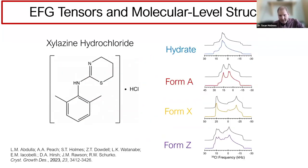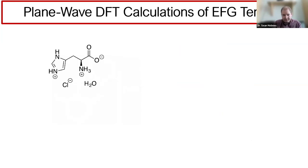As an example, we can look at the pharmaceutical xylazine hydrochloride, a veterinary sedative. We looked at four different polymorphs or pseudopolymorphs—a hydrate and three anhydrous polymorphs—and each gives a unique spectral fingerprint that cannot be mistaken for the others. This is because each solid form features a distinct arrangement of hydrogen bonds around the chlorine atom. Our goal is to use plane wave DFT to calculate these chlorine EFG tensors and relate them to molecular-level structure.